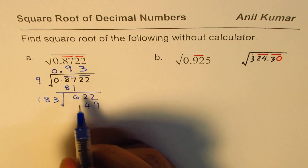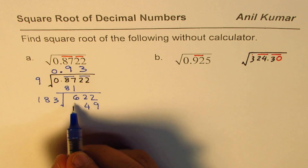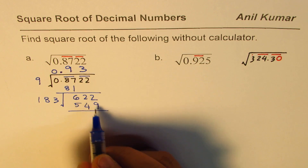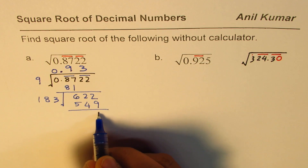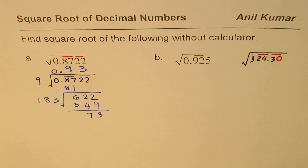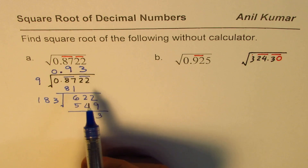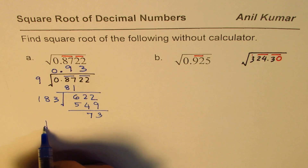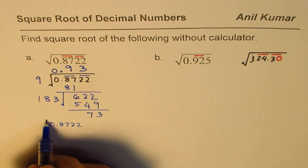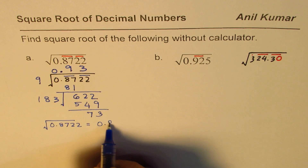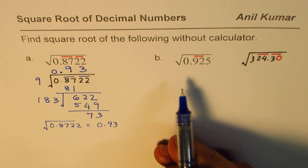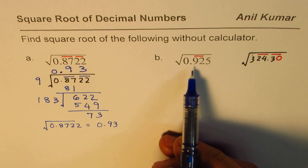Place 3 here. Multiply: 3 times 3 is 9, 3 times 8 is 24, 3 times 1 is 3, giving us 183 times 3 equals 549. Subtracting: the remainder is 73, but approximately the square root of 0.8722 equals 0.93.